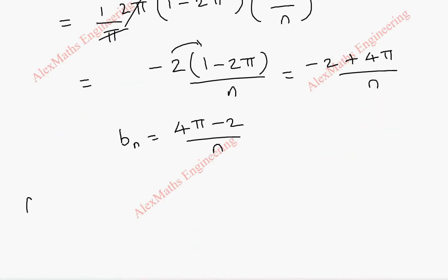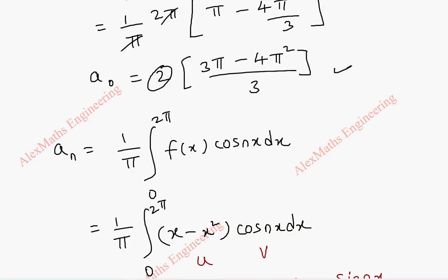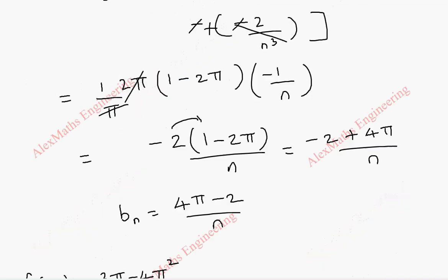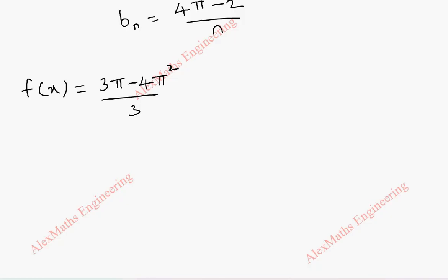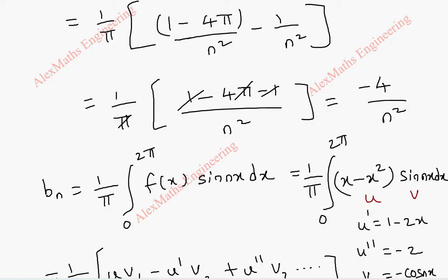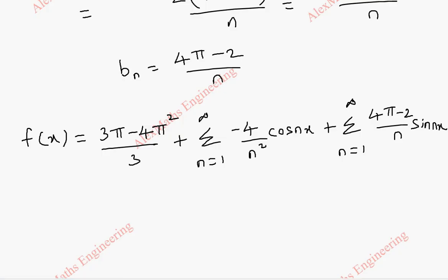Now substituting into the Fourier series formula: f(x) = a₀/2, and since a₀ = 2(3π minus 4π²)/3, dividing by 2 gives (3π minus 4π²)/3. Then plus sigma n=1 to infinity of aₙ cos(nx), where aₙ = minus 4/n², so minus 4/n² cos(nx). Plus sigma n=1 to infinity of bₙ sin(nx), where bₙ = (4π minus 2)/n. Thus we have found the complete Fourier series for f(x).